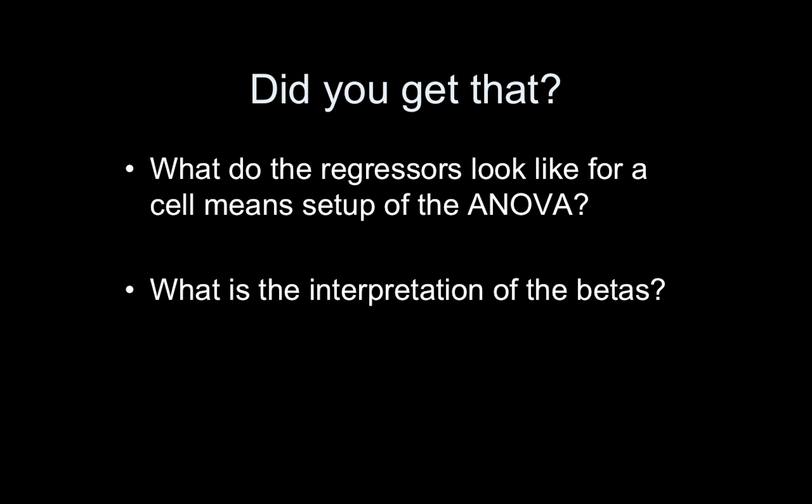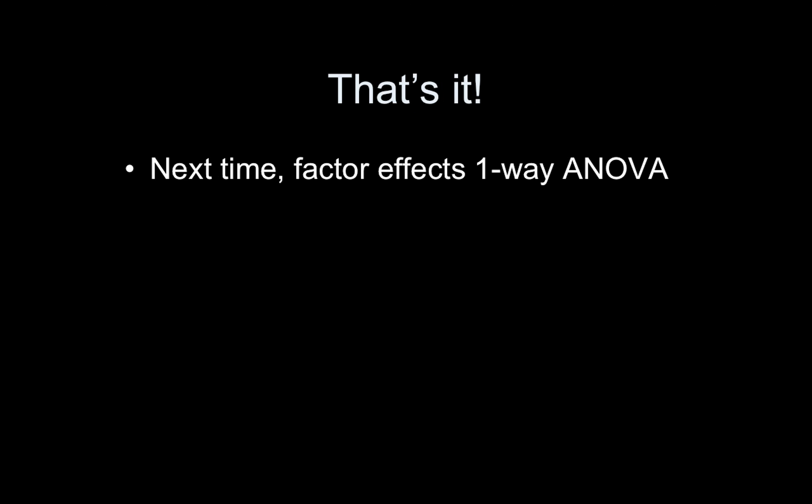That's it. Make sure you know the rules for what do the regressors look like for a cell means setup of an ANOVA. Typically people are most comfortable with this design matrix setup. Make sure you know what the interpretation of the betas are. That's specifically why people like this setup, because the interpretation of the betas is much more straightforward, more intuitive. Next time will be the Factor Effects One-Way ANOVA. As usual, I invite you to join the Facebook group. It's just Mumford Brain Stats. Please join the group and not that page. The page is unexciting. Not a lot of interaction there. All right, you have a great day and I will see you next time.